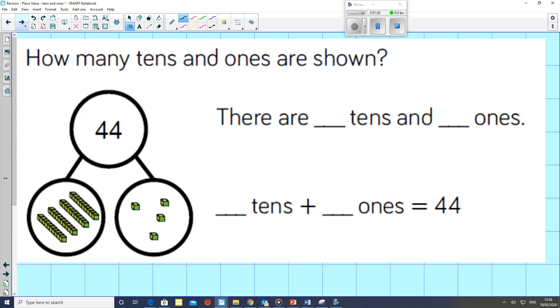So let's look again at what we have been doing in class. If we look at the concrete objects that were used here, how many tens and ones are shown? The number 44.